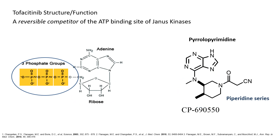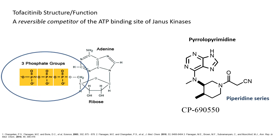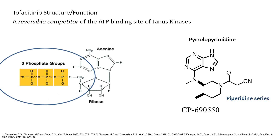Finally, ATP has three phosphate groups — that's what makes ATP the currency of life. Where are the phosphates in tofacitinib? They're not there, because it's a competitor inhibitor of ATP — not a source of energy itself.